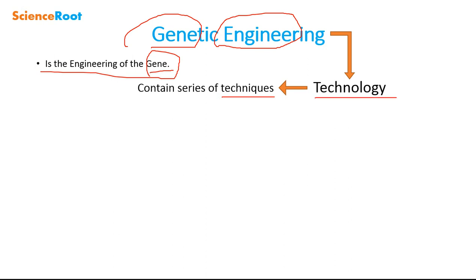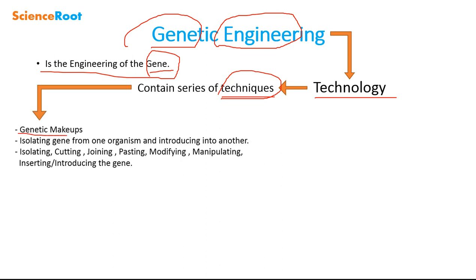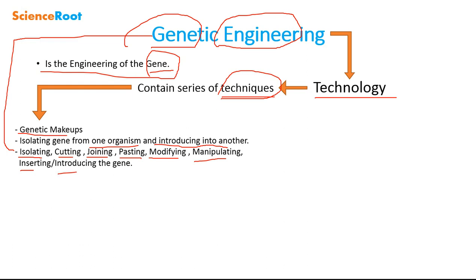The techniques include isolating a gene from one organism and introducing it to another. The desired gene, from which we want to get the product, is isolated and then introduced to another organism. Genetic engineering also involves isolating, cutting, joining, testing, modifying, manipulating, and inserting DNA fragments or genes.